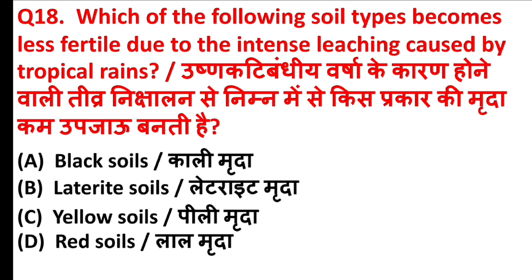Which of the following soil types becomes less fertile due to the intense leaching caused by tropical rains? The answer is Option B, Laterite soil.